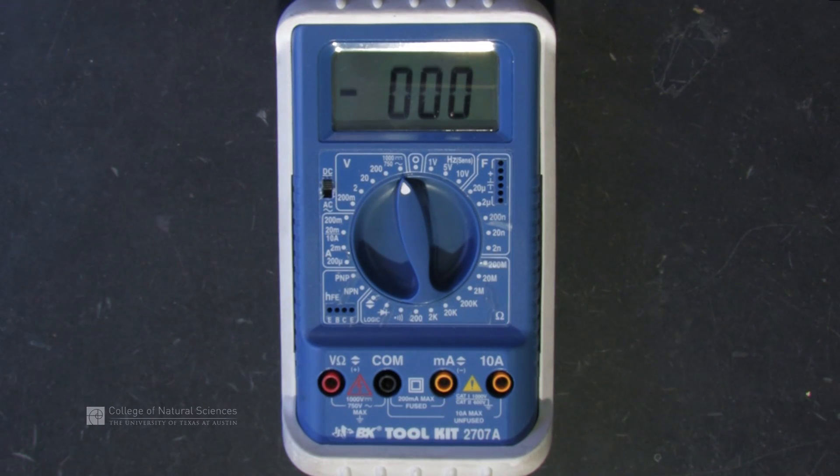Next, plug in the black probe to the COM port. This will always happen for all different uses of the multimeter.